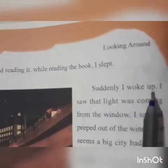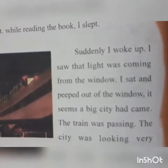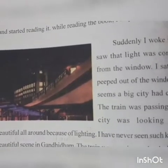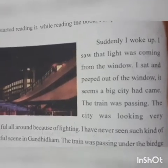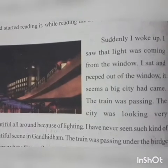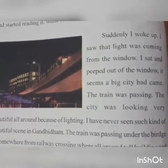While reading the book, Ria fell asleep. Suddenly she woke up and saw that light was coming from the window. She sat and peeped out of the window - it seemed a big city had come. The train was passing and the city looked very beautiful because of the lighting. She was looking at the lights and big buildings, and realized it was some big city they were entering. The train was still moving - she had never seen such beautiful lights in Gandhidam.